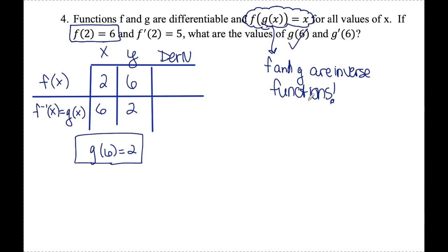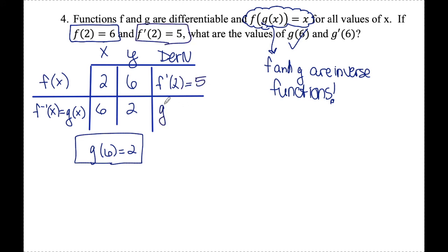The other piece I'm looking for is g prime of 6, which is 1 over the derivative of f. So I need f prime of 2, which they gave me as 5. That tells me g prime of 6 is 1 over 5.